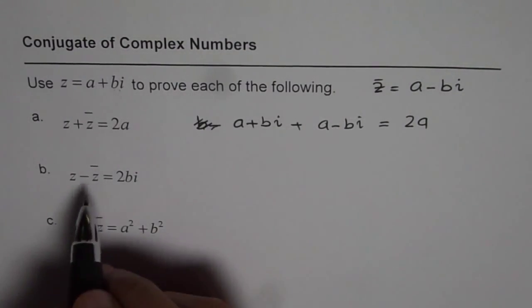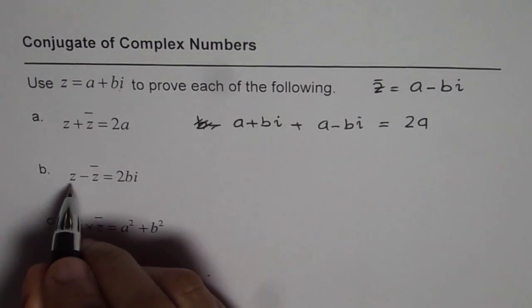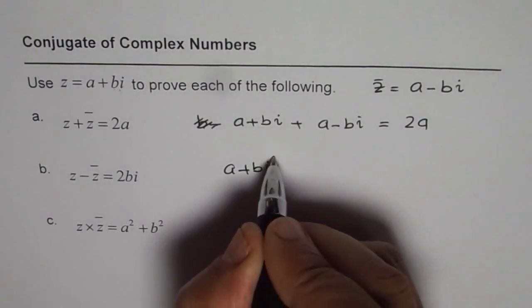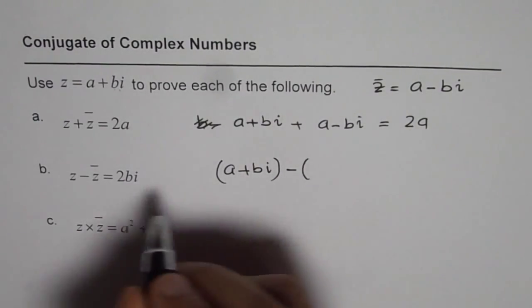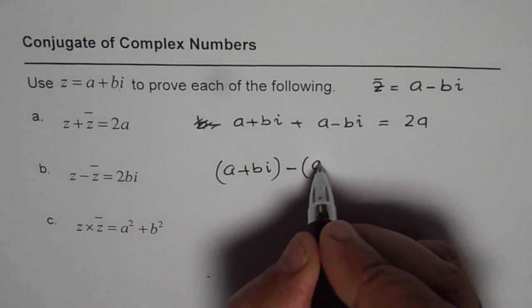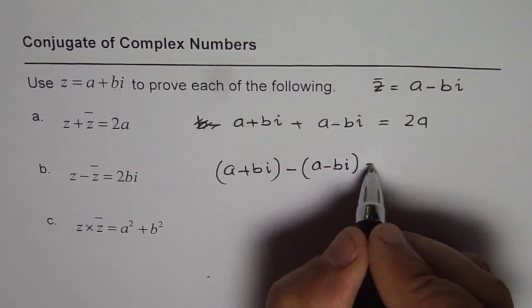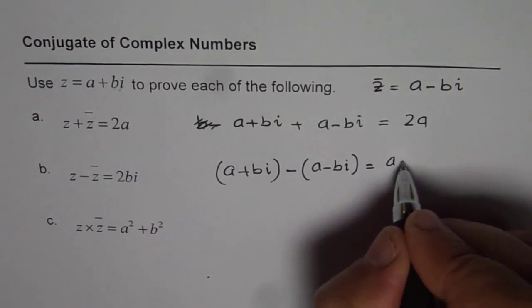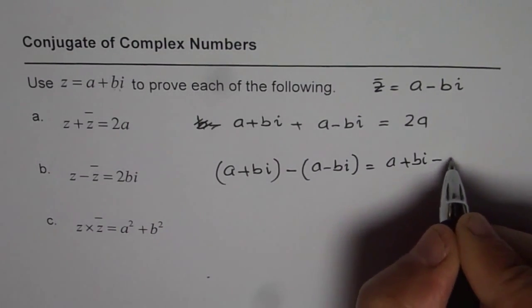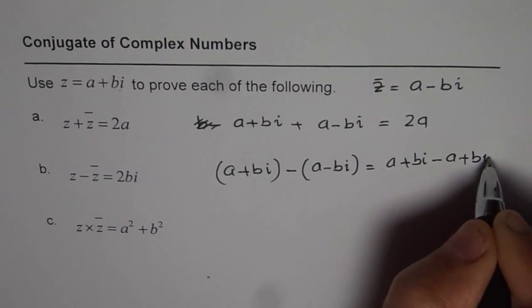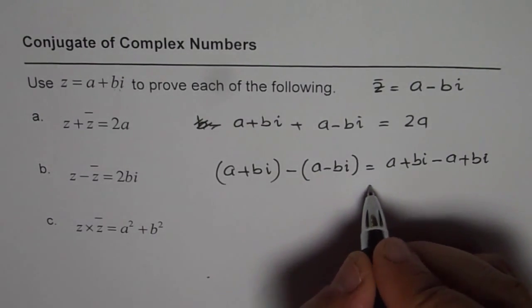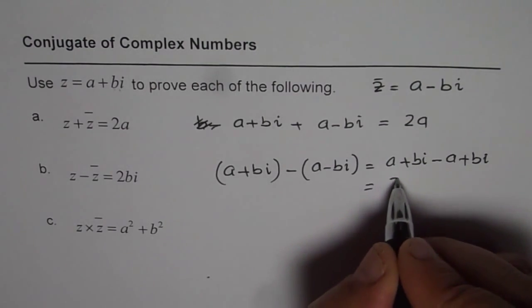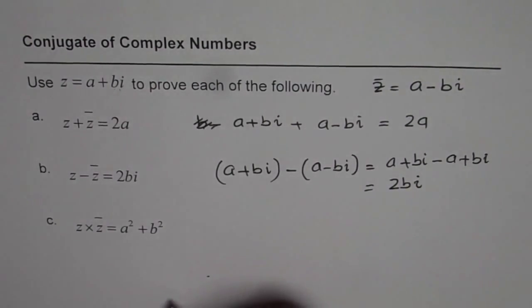Let's do the next one. Let's take away, that means z minus z bar. Z is a plus bi. Let me write a plus bi again. Z bar is a minus bi. You can now open the bracket and then combine the like terms. So we get a plus bi minus a plus bi. Minus will change both the signs, and this will give us a minus a is 0, bi plus bi is 2bi. So that is how it is.